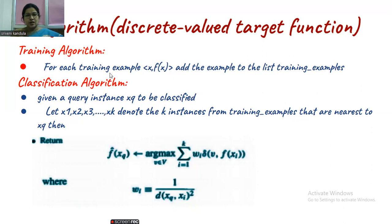In the training algorithm, similar to KNN, whenever you get an example, we simply store it in the training examples. Coming to the classification algorithm, whenever you get a new instance xq that has to be classified, let x1, x2, x3 up to xk denote k instances from the training examples that are nearest to xq. That means you have to calculate the distance using Euclidean distance. Based on that, you have to pick the k instances.